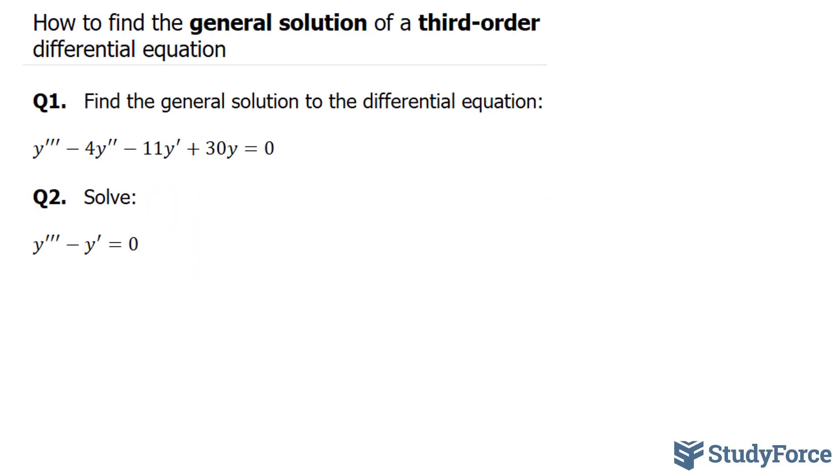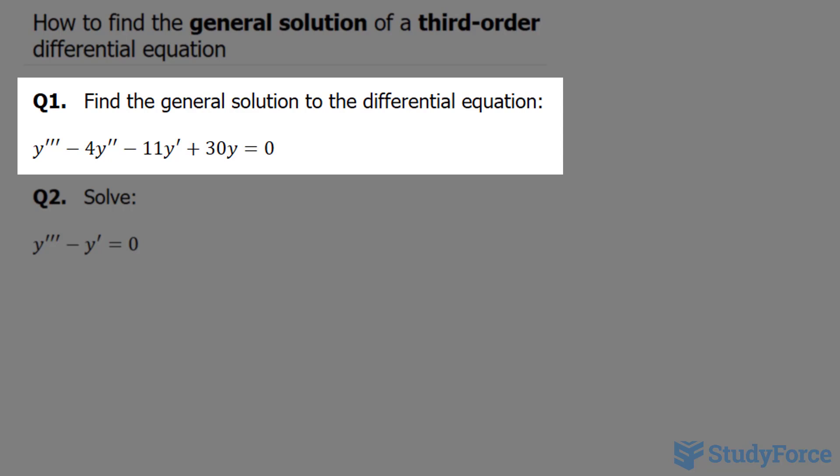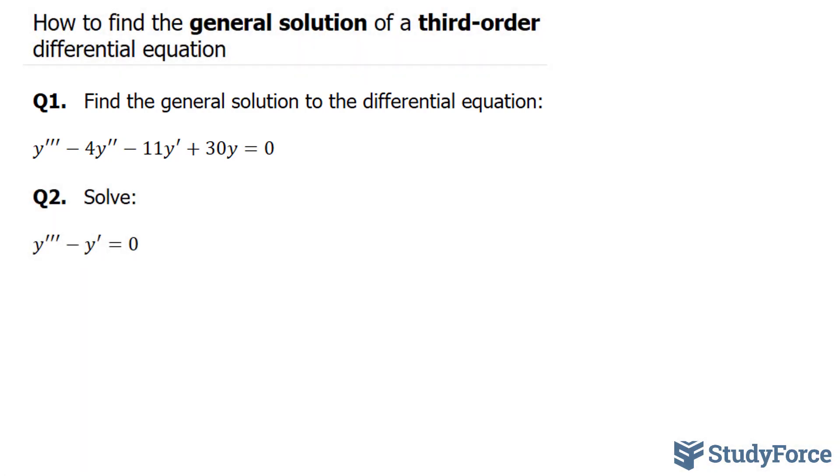In this lesson, I'll show you two examples on how to find the general solution of a third order differential equation. Question 1 reads, find the general solution to the differential equation y triple prime minus 4y double prime minus 11y prime plus 30y is equal to 0.